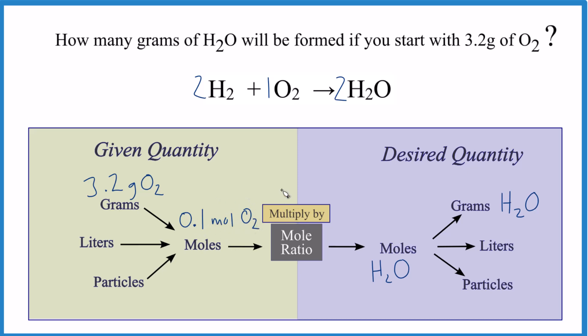Here we have our 0.1 moles of O2 that we figured out, and now we use the mole ratio. So what we could say is for every one mole of O2 we have two moles of water—that's the ratio. And down here we could also say for every two moles of water we have one mole of O2. That's valid as well.